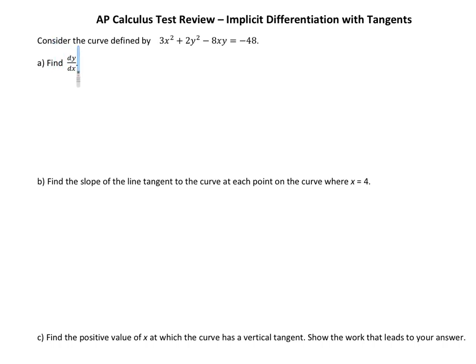Consider the curve defined by 3x squared plus 2y squared minus 8xy equals negative 48. On this one, let's use a different color. Find dy/dx — that means we need to implicitly differentiate this. So, let's see how we can do this.